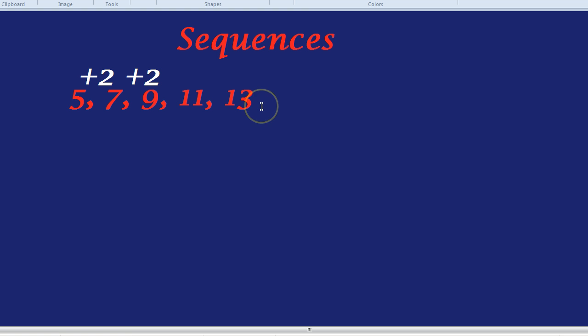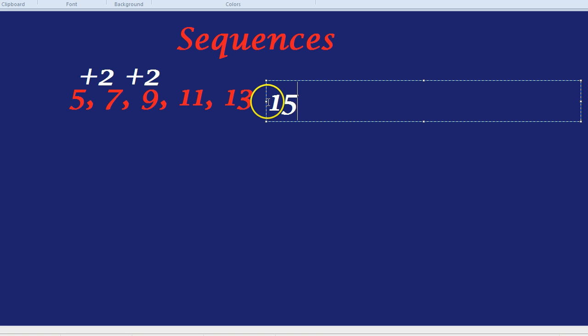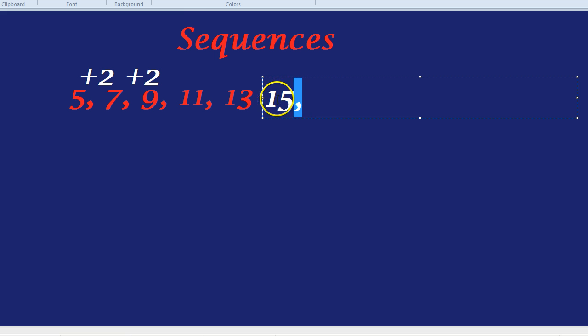What would the next two numbers in the sequence be? We've got the first term, the second term, the third, fourth and fifth term. What would the sixth and seventh term? The sixth term would be 15 if you add 2 on. And the seventh term would be 17.